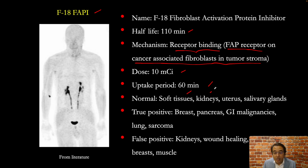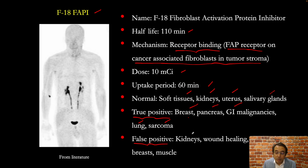Physiologic uptake is seen in the soft tissues, excretion from the kidneys, and faint uptake in the uterus and salivary glands. True positives are seen in breast cancers, pancreatic cancers, GI malignancies, lung cancers, and sarcomas. False positives can be seen with renal excretion and focal activity in the ureters, wound healing, normal breast tissue, and sometimes normal muscle uptake. Thank you for watching.